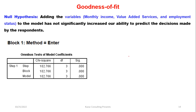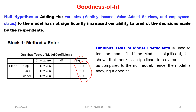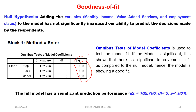We check the result of the model coefficients. If the significant value is less than 5% (0.05), we reject the null hypothesis. The full model has significant prediction performance with a chi-square value of 102.3, degrees of freedom 3, with a p-value less than 0.01. Since this is significant, we reject the null hypothesis.